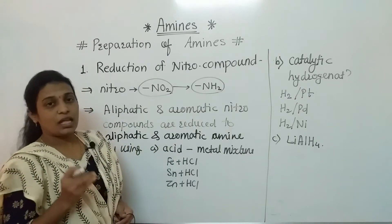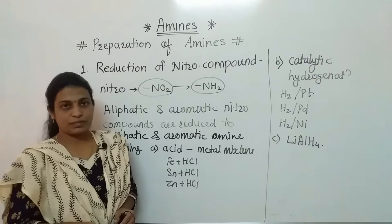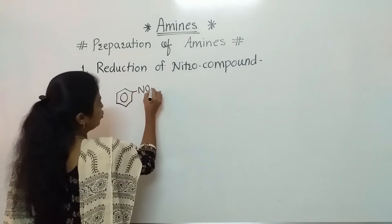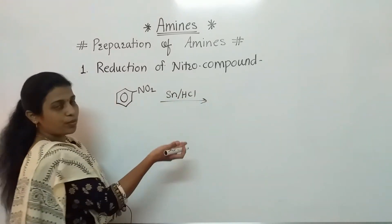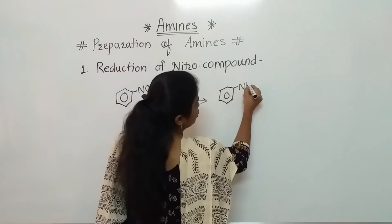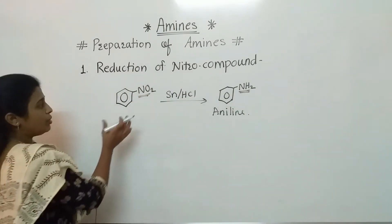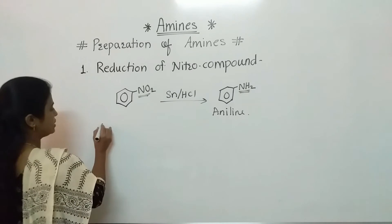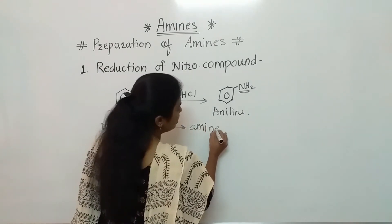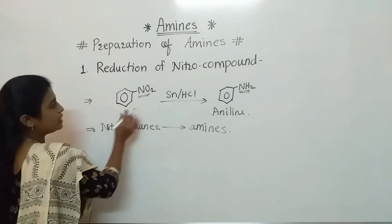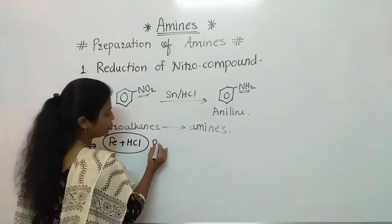Hope everyone understood the theoretical part. Now we will discuss the reactions and some examples regarding amine preparation by reduction of nitro compounds. If we consider nitrobenzene, using any one of those methods, we can prepare aniline — the NO2 group gets converted into the NH2 group attached to the benzene ring. Similarly, nitroalkanes can also be converted into alkyl amines. An important point: Fe plus HCl mixture is preferred for the preparation of aniline.